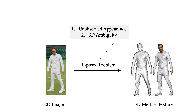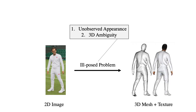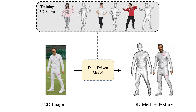First, the lack of visual information in unobserved regions. And second, the ambiguity of extracting 3D information from 2D images. While previous methods have attempted to learn data-driven models that map 2D images to 3D meshes, they often face difficulties with unseen images and poses, primarily due to the limited number of 3D training scans available.